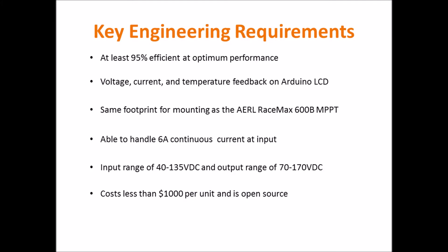Some of the key engineering requirements that we focused on for our project were having our project meet a 95% efficiency at optimal performance, also showing the voltage current and temperature outputs on our Arduino LCD and having the same footprint for mounting as the Arial Racemax 600B MPPT. We also wanted our MPPT to handle the six amps continuous current at the input and it also needed to have a range of 40 to 135 volts DC with an output range of 70 to 170 volts DC. Finally we required the cost to be less than a thousand dollars per unit and that our project be open source.